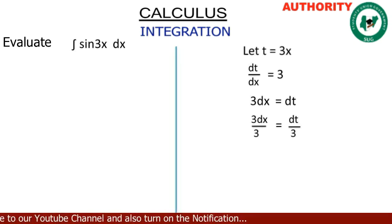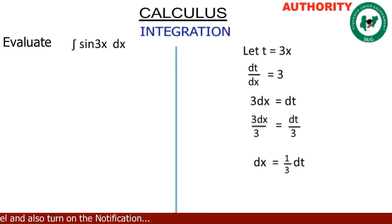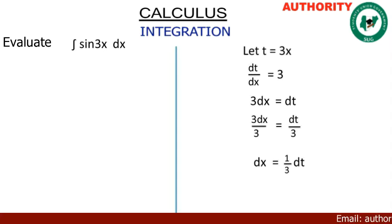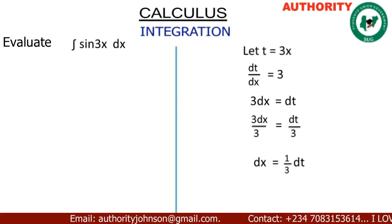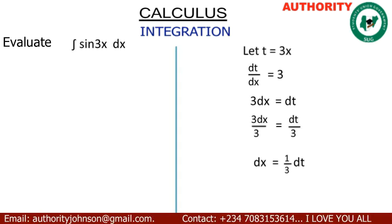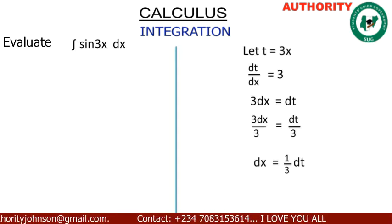That means we have dx is equal to dt over 3, which can be written as 1 over 3 dt. So dx is equal to 1 over 3 dt. Now from our function, we have the integral of sine 3x dx. We are going to replace 3x with t, and dx with our new value 1 over 3 dt.